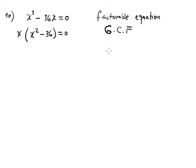Equal to zero. Now you apply difference of square, and then we have two parentheses. x, square root of x is x, square root of 36 is 6, plus or minus.